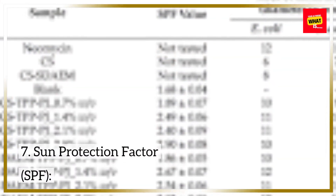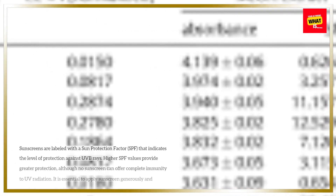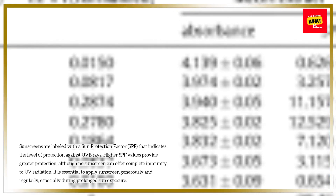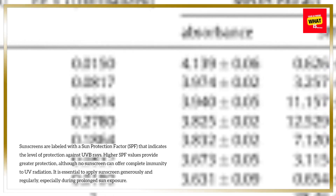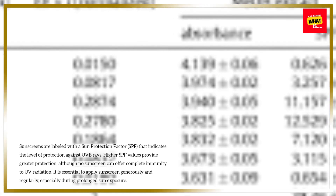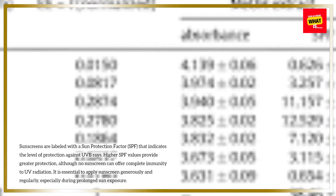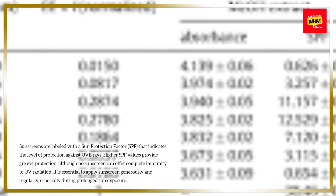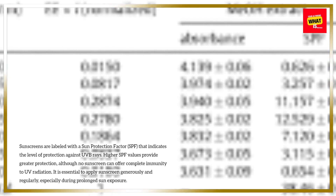7. Sun Protection Factor (SPF): Sunscreens are labeled with a sun protection factor, SPF, that indicates the level of protection against UVB rays. Higher SPF values provide greater protection, although no sunscreen can offer complete immunity to UV radiation. It is essential to apply sunscreen generously and regularly, especially during prolonged sun exposure.